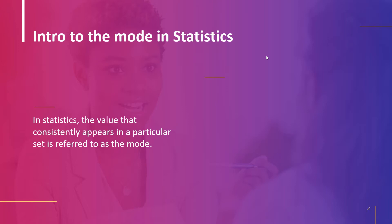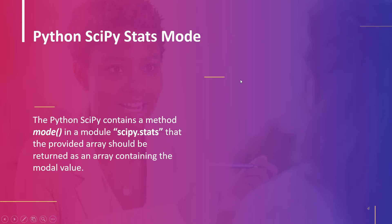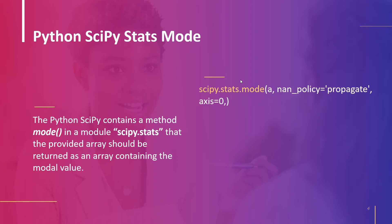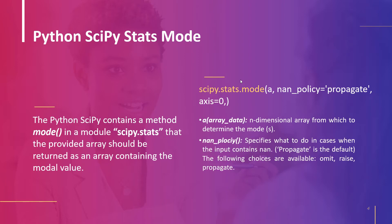The next topic is Python scipy stats mode. The method called mode in the scipy.stats module of the Python scipy library specifies that the array supplied should be returned as an array holding the modal value. If there is more than one such value, only the smallest is returned. The bin count for the mode bins is also returned. The syntax of the method is scipy.stats.mode, where the parameter 'a' represents the n-dimensional array of which to find the mode. The nan_policy parameter defines how to handle input when it contains NaN values.